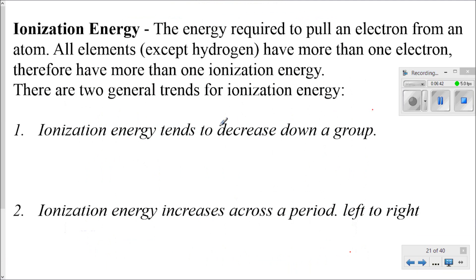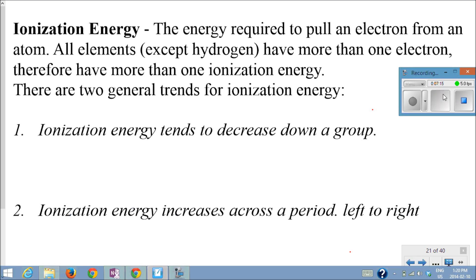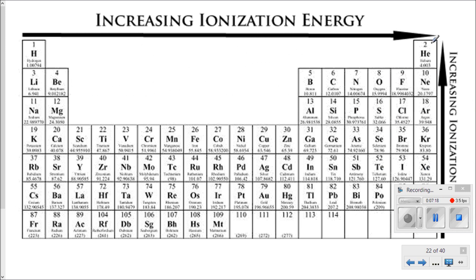Now let's talk about the second trend: ionization energy. It is the energy required to pull an electron from an atom. All atoms except hydrogen have more than one electron, so they have more than one ionization energy - for the first electron it's the first ionization energy, the second is the second ionization energy, and so on. The general trend is that ionization energy tends to decrease down a group, and increases from left to right. The atom with the highest ionization energy is helium.